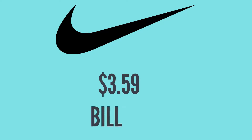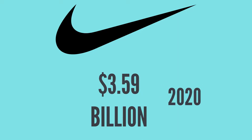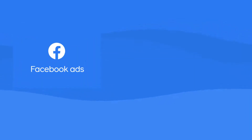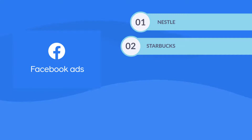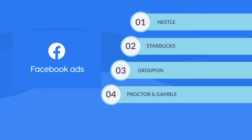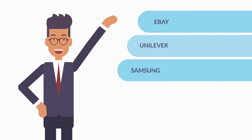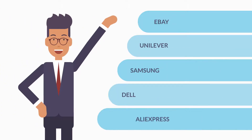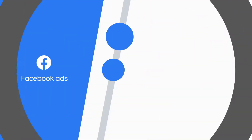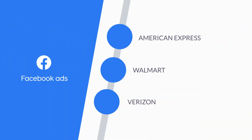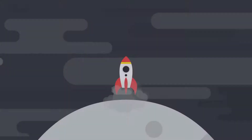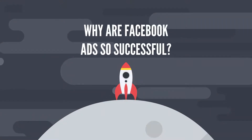Nike prefers to bring its ads first on Facebook before they appear on TV screens, spending around 3.59 billion dollars on Facebook ads in 2020. Other well-known brands using Facebook ads include Nestlé, Starbucks, Groupon, Procter & Gamble, L'Oréal, eBay, Unilever, Samsung, Dell, AliExpress, American Express, Walmart, and Verizon.